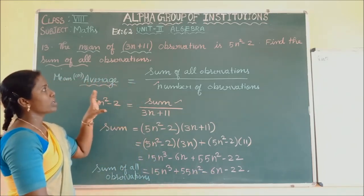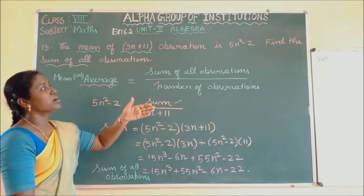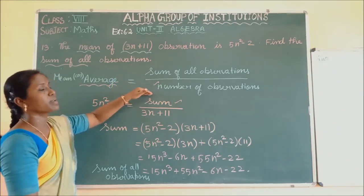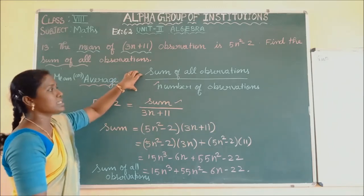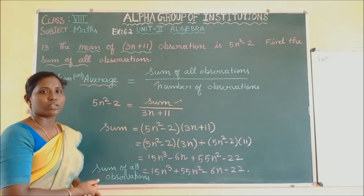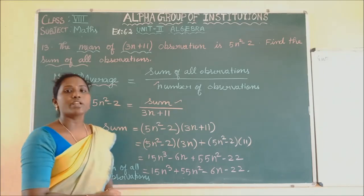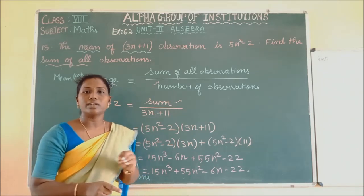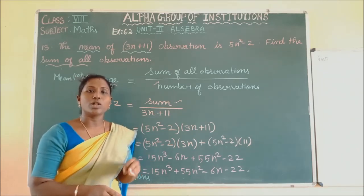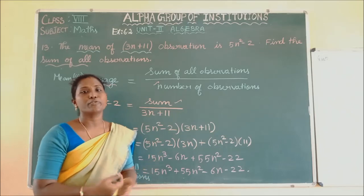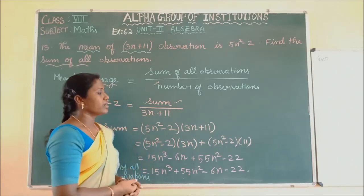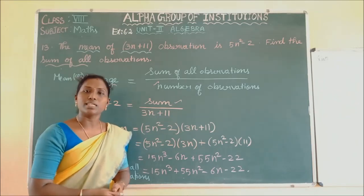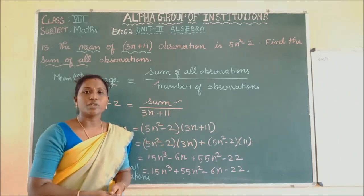Whatever questions involve mean, number of observations, and sum of observations — just use the single formula: mean equals sum of all observations divided by number of observations. With this, we have completed exercise 6.2. Recall all 4 algebraic identities clearly and complete the exercise problems. Thank you, children.